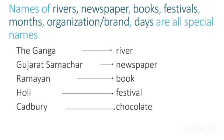Names of the world, newspaper, books, festivals, months, organizations, or a brand, and days are all special names. For example, Ganga is the name of a river — so Ganga is a special name and river is the common name.